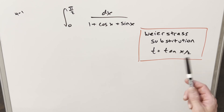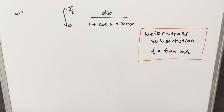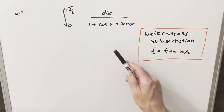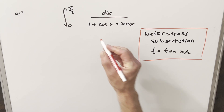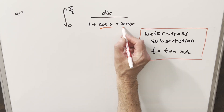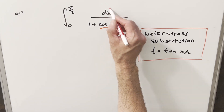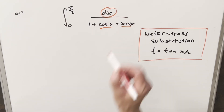Because I haven't done one of these in quite a while, I'm actually going to derive all the formulas that we need for this. Once we have the formulas, this is actually a really quick problem. So let's go through how we get a value for cosine x, sine x, and dx.